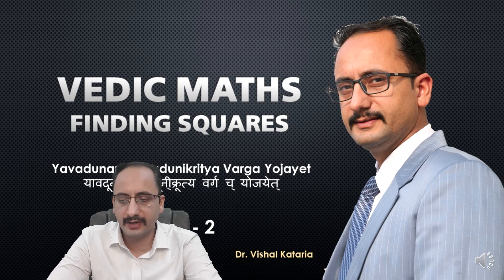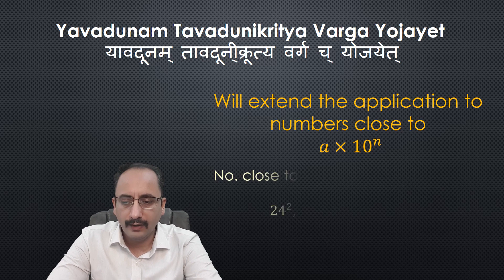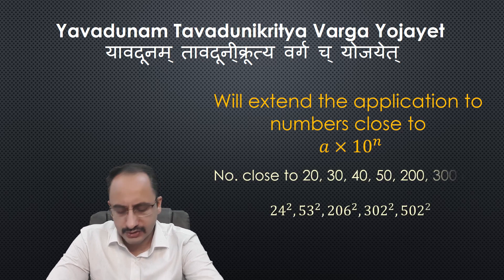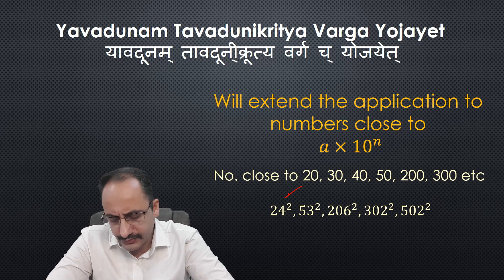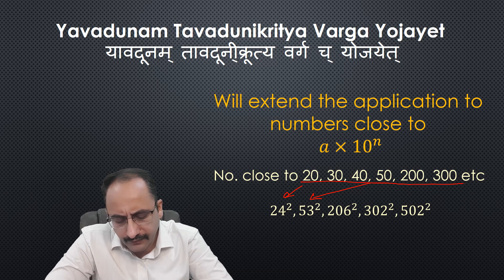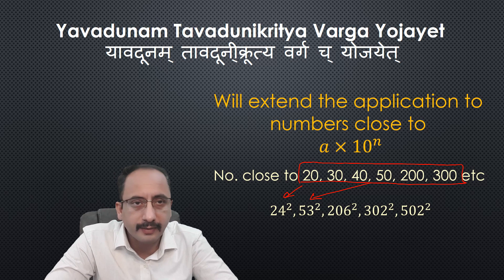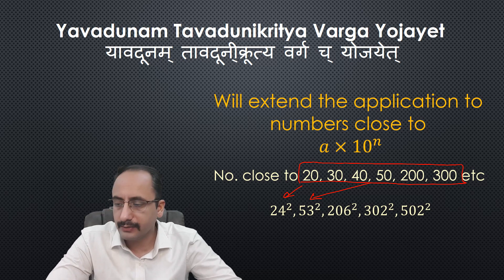So this is the second part of the video. In this video, we will learn how to find squares of numbers like 24, 53, and 206. 24 is close to 20, 53 is close to 50, and 206 is close to 200. These numbers are not powers of 10, but they are multiples of powers of 10. Before we proceed further, I'm going to introduce a new term: sub base.